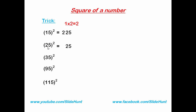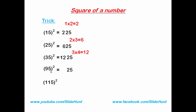Let's square 25: 5 squared is 25. Remaining digit is 2, next number is 3, so 2 times 3 is 6. Square of 25 is 625. Now 35: 5 squared is 25. Next number of 3 is 4, so 3 times 4 is 12. Square of 35 is 1225. For 95: 5 squared is 25. Next number of 9 is 10, so 9 times 10 is 90. Square of 95 is 9025.